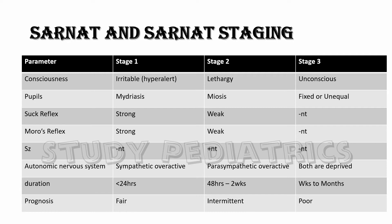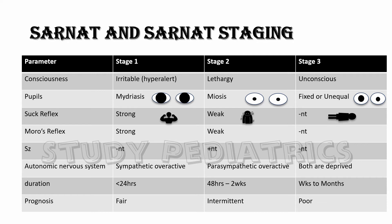Coming to the parameters based on consciousness: stage 1 is irritable, stage 2 is lethargic, and in stage 3 the child is unconscious. Coming to the pupils — they are dilated or mydriatic in stage 1, miotic in stage 2, and unequal and fixed in stage 3. The suck reflex and Moro reflex are strongly present in stage 1, weak in stage 2, and absent in stage 3.